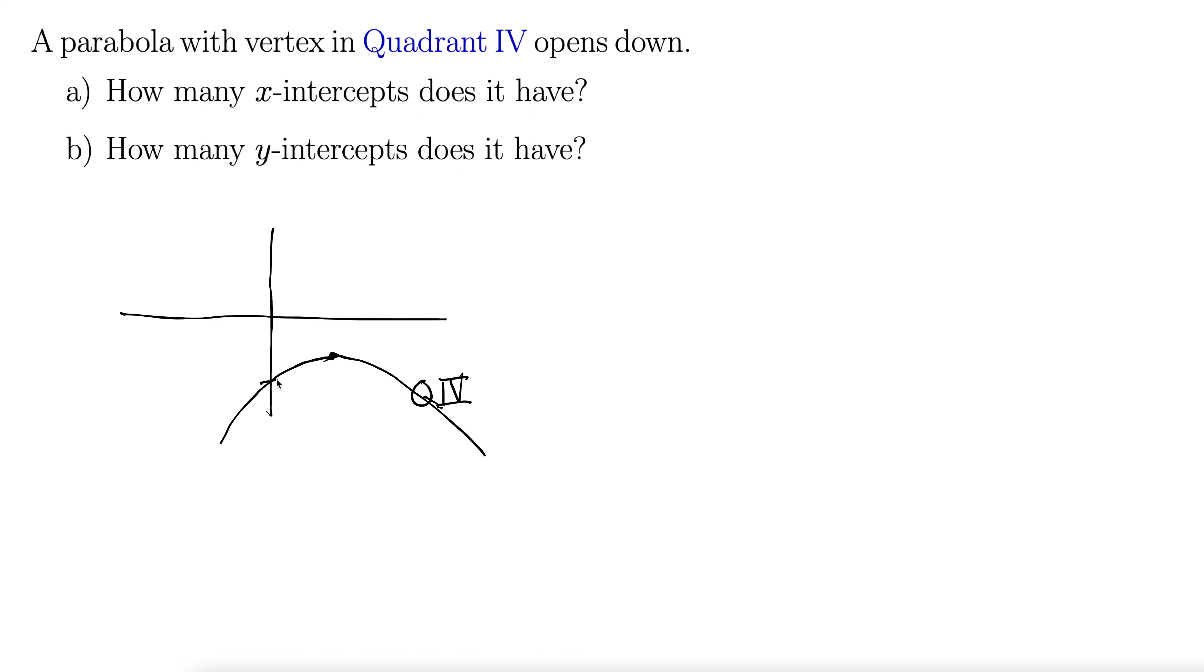Well, I'm seeing one y-intercept, but no x-intercepts, right? If the vertex is in quadrant 4, and the parabola opens down, there's no way it can ever touch the x-axis.